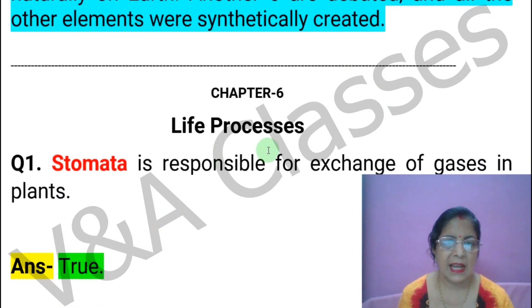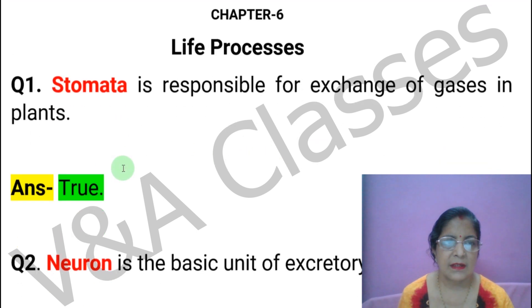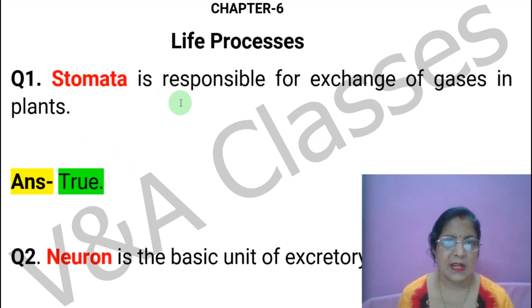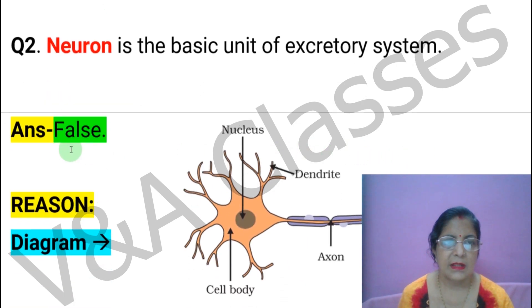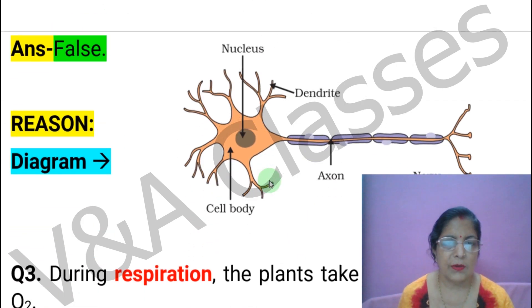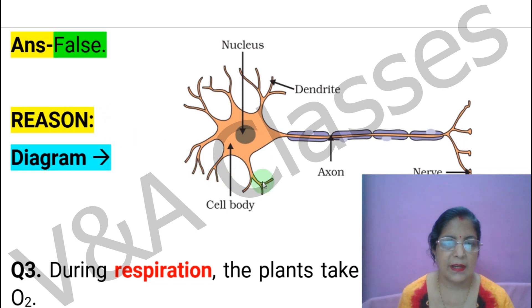Now Chapter 6: Life Processes. First statement: Stomata are responsible for the exchange of gases in plants. This statement is TRUE. Next statement: Neuron is the basic unit of the excretory system. This statement is FALSE. The reason is: a neuron is a nerve cell and is not part of the excretory system.